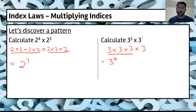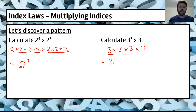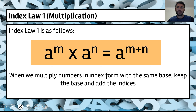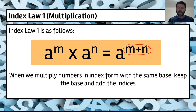Can you see a pattern? If we look at these two indices, how are we getting these two numbers and ending up with that result? It's pretty simple — we're just adding them together. When we've got the same bases and we're multiplying, we just add the indices together. So in this case we added 4 plus 3. This is what the law is: a to the m multiplied by a to the n equals a to the m plus n. We keep the base the same and add the indices.